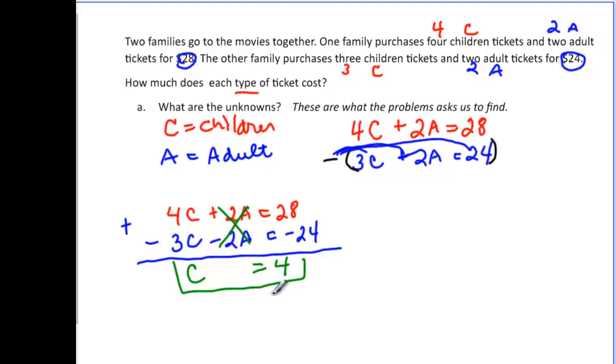Again, remember you just plug it back into one of your original equations. I'm going to plug it back into the bottom equation, only because the numbers are a little bit smaller. So 3 times my C, which is 4, and then plus 2A is equal to that 24. Well, 3 times 4 is 12, plus 2A equal 24. And then I'm going to subtract my 12 from both sides.